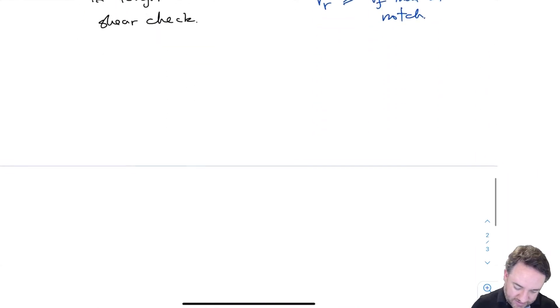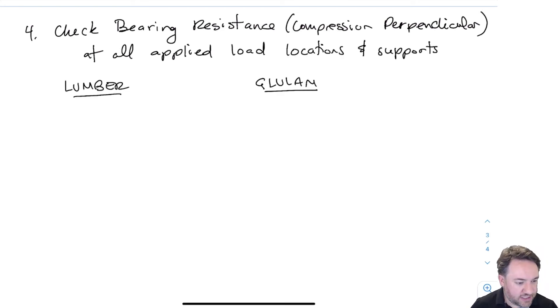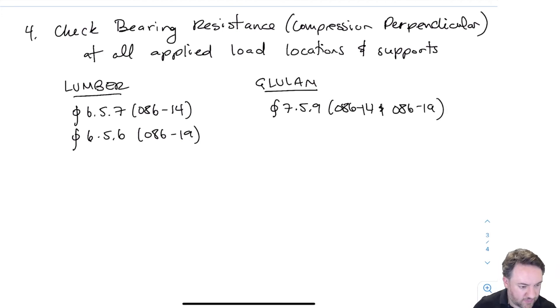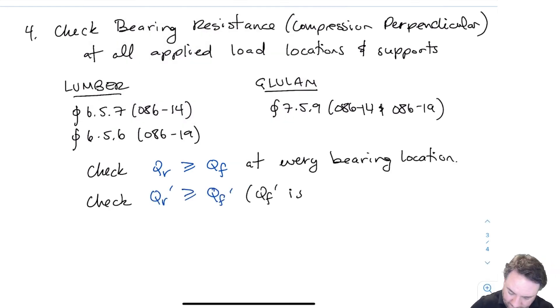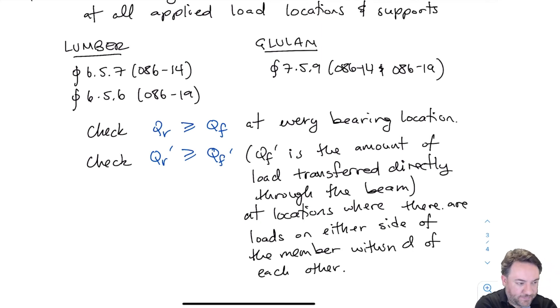So let's move on to bearing resistance. So this bearing resistance check for a beam, I need to do it everywhere where there's an applied load or where there is a support, which is also an applied load. It's just a reaction load. And the clauses for that are as follows. So the approach is identical between lumber and glulam. And basically I have two different criteria. One is for effect of all applied loads, as we've talked about. And one is our QR prime, which is effective loads applied near a support.